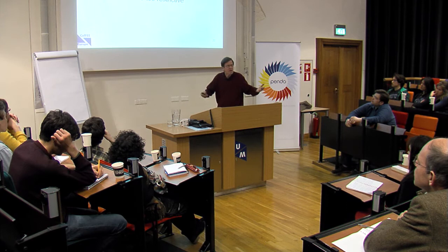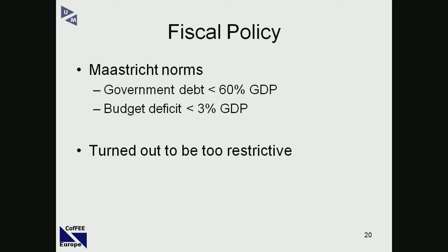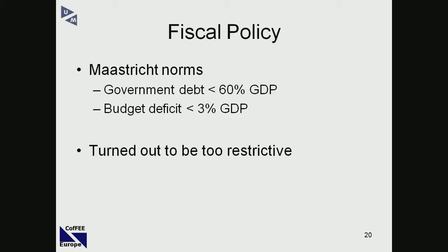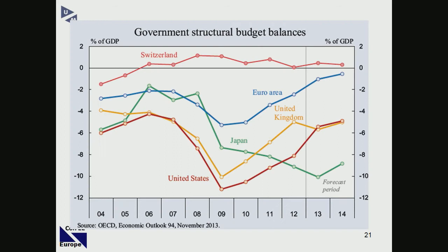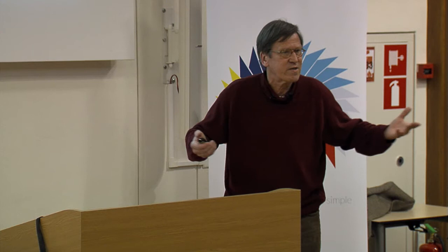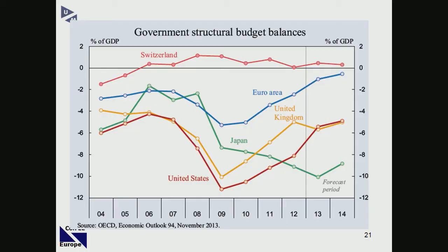On fiscal policy: we have our famous Maastricht norms from the Maastricht Treaty of 1992. We agreed there to have a maximum 3% deficit, which later was said should actually be 0% on average, and government debt below 60%. With this in our pocket, we entered the crisis. In the US, the deficit increased enormously — George Bush ended the war in Iraq, lowered taxes, and was surprised they had a deficit. Obama inherited this, and the deficit increased enormously; it is still around 5-6%.